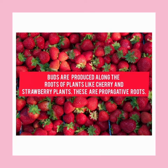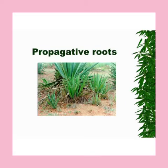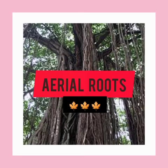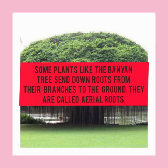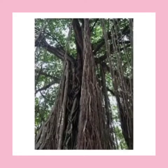Propagative roots: buds are produced along the roots of plants like cherry and strawberry. These are propagative roots — they help to produce more of their kind. Third, aerial roots: some plants like banyan trees send down roots from their branches to the ground. These are called aerial roots.